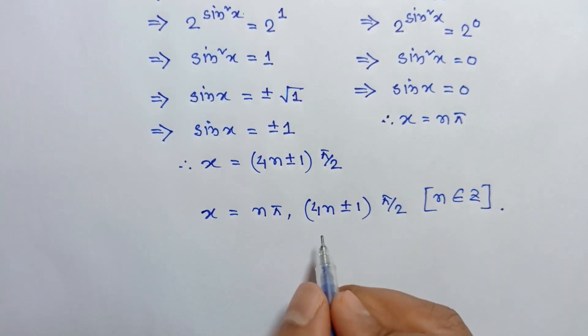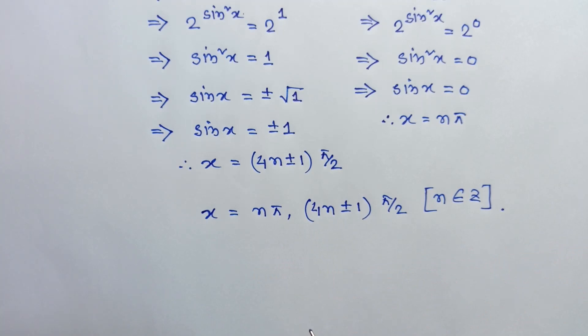So the general solution of the given equation is x equals n pi and x equals n pi plus or minus pi over 2, where n is an integer. This is the solution of this equation. If you like this video, please subscribe to my channel. Thanks for watching.